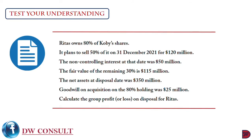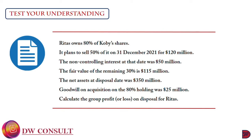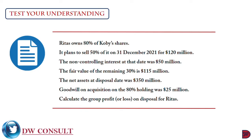Let's test understanding again. Retest owns 80% of Copy shares and plans to sell 50% of it on 31st December 2021 for 120 million dollars. The non-controlling interest at that date was 50 million dollars. The fair value of the remaining 30% is 150 million dollars. The net assets at disposal date was 350 million dollars. Goodwill on acquisition of the 80% holding was 25 million dollars. We are required to calculate the group profit or loss on disposal for Retest.